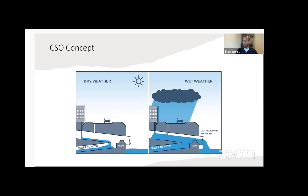But during heavy rainfalls and severe thunderstorms, they can overfill and exceed capacity. To prevent backing up into buildings or streets, a lot of cities — when constructed 50 or 100 years ago — had an overflow outlet pipe that went into a body of water, a river or a lake. At the time it was designed, it was perfectly acceptable, but now not so much.